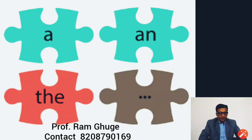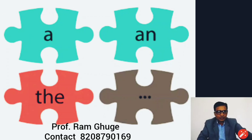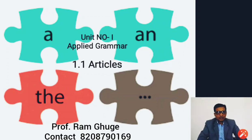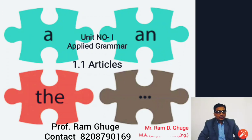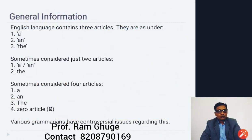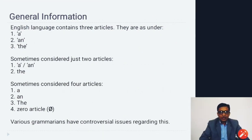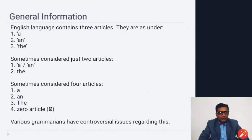The two important things we are going to understand through this lecture are: what is an article, and how we can use them in sentences. The first unit in the MSBT syllabus is applied grammar, which simply means knowing the use of different grammatical parts in real life situations or when we want to make sentences.